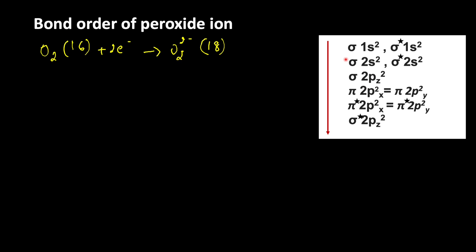Using this information let us write the electronic configuration of peroxide ion. Sigma 1s2, then sigma star 1s2, sigma 2s2, then sigma star 2s2, after that sigma 2pz2. After sigma 2pz, the electrons enter into pi 2px and pi 2py.